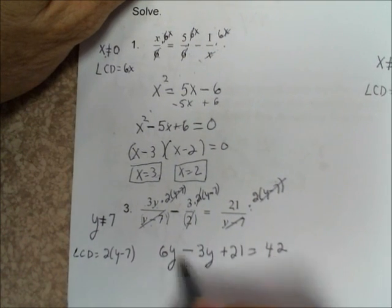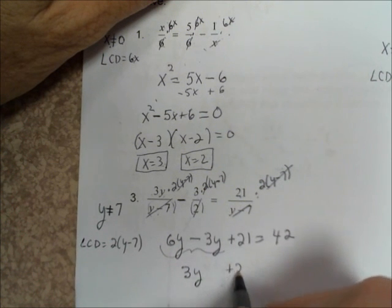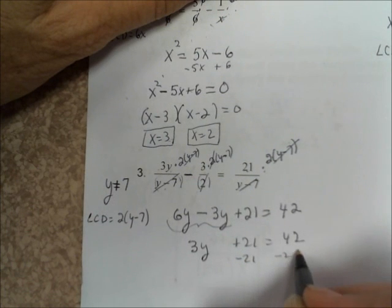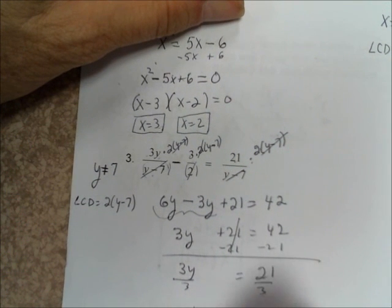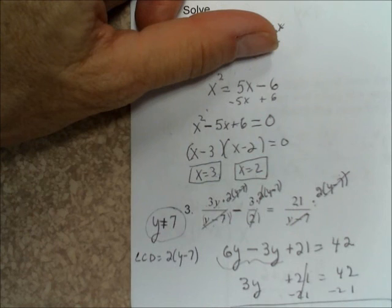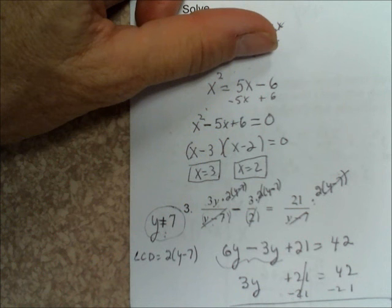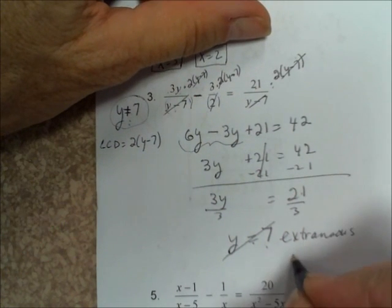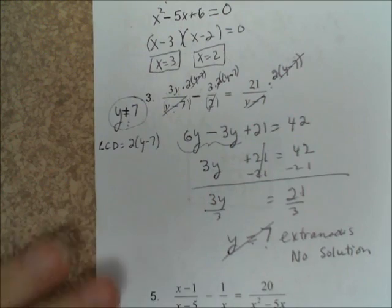This is not quadratic, so we just combine like terms. 6y minus 3y is 3y, plus 21 equals 42. Subtract 21 from each side and you get 3y equals 21. Divide by 3, and y equals 7. But look at what we said in the beginning — y cannot be equal to 7. So if we algebraically get a number we said can't happen, we call this extraneous. Since there was only one answer and it turns out to be extraneous, there is no solution to this problem.